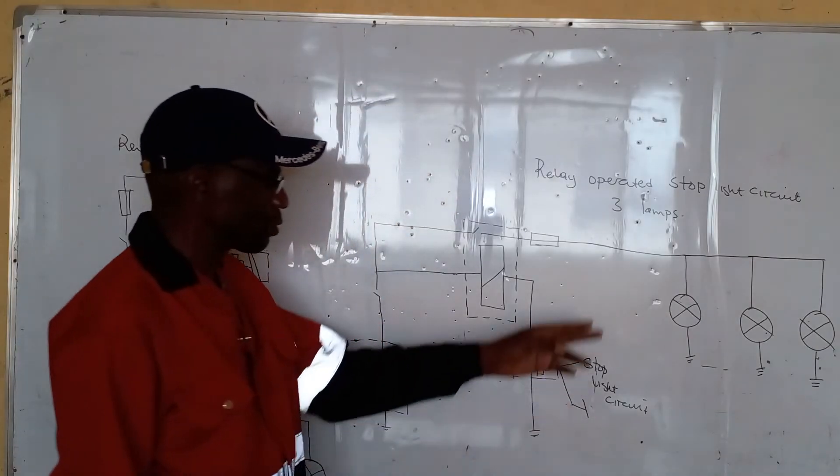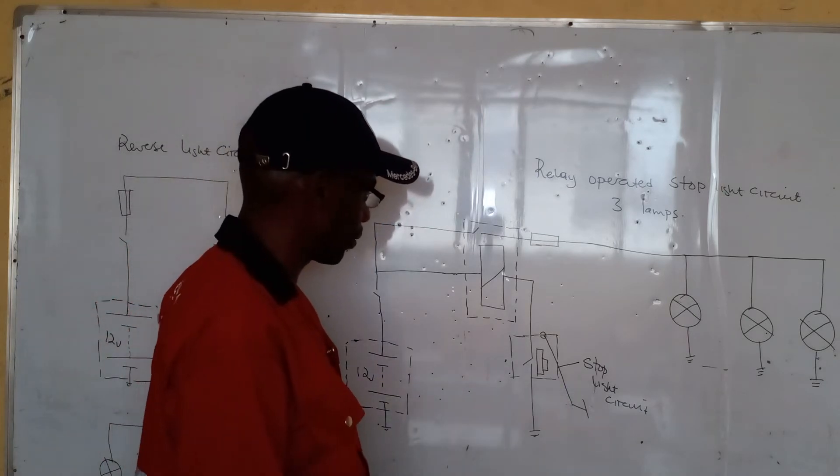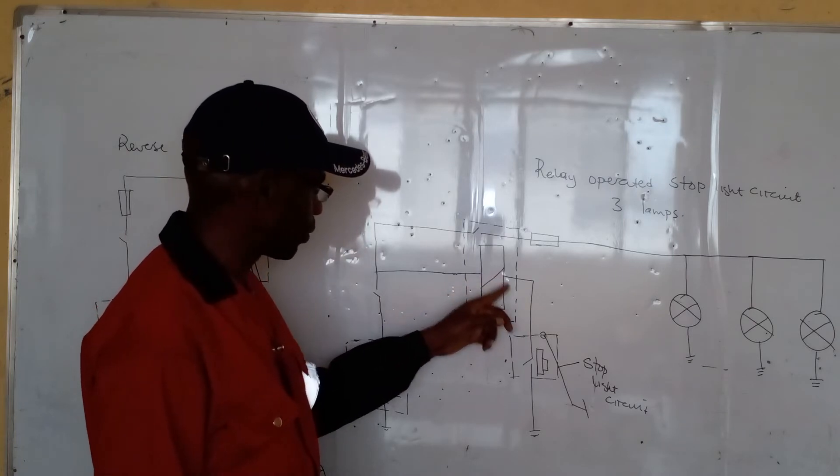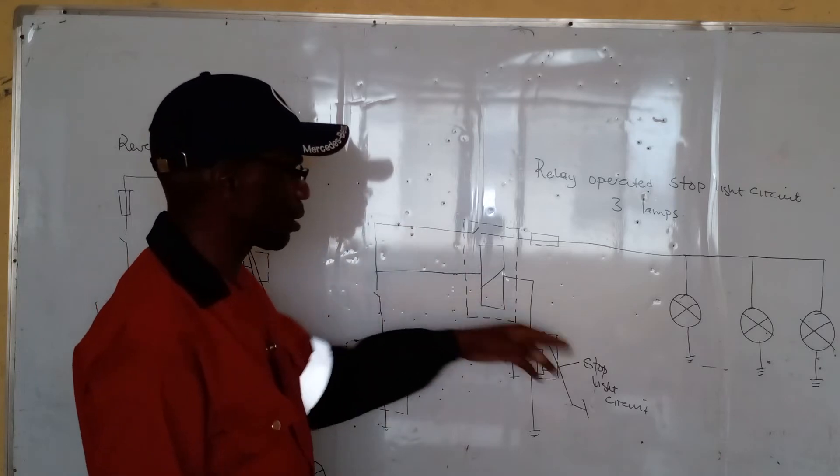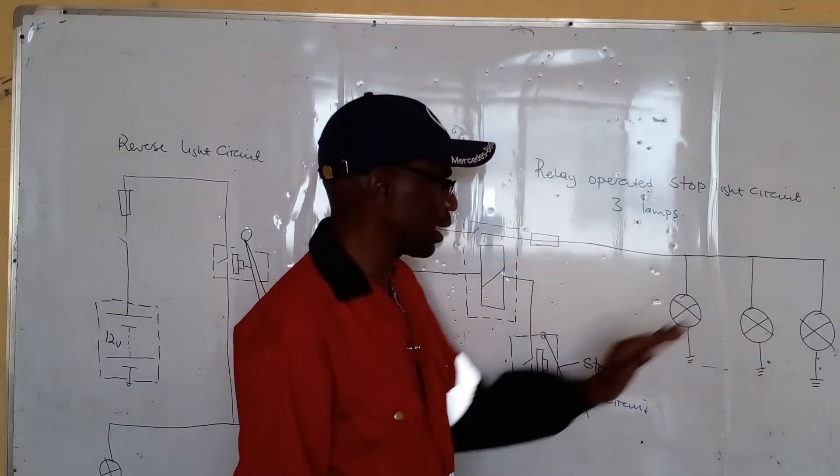For the lamps to come on, it requires that the driver step onto the brake pedal, and connect the relay to ground, and this will then connect power direct from the battery to the lamps, then the lamps will normally shine in the red light.